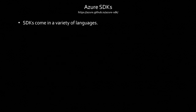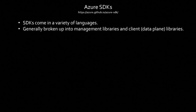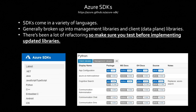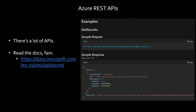The Azure SDKs come in a variety of languages, broken up into management libraries or client libraries. There's been a lot of refactoring, particularly for Python. Make sure you test before updating to a new library version — a lot of changes revolve around how identities are handled at a lower level. Libraries past spring 2020 are compatible with each other. The REST APIs are all documented at docs.microsoft.com.